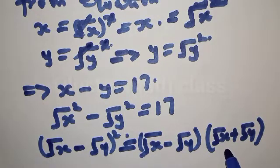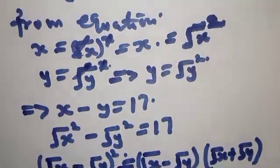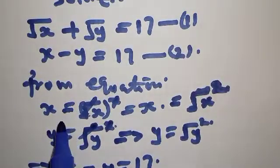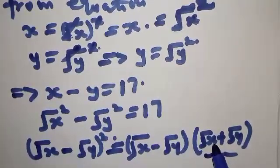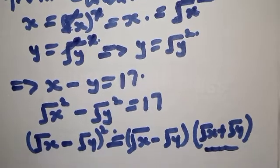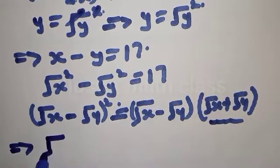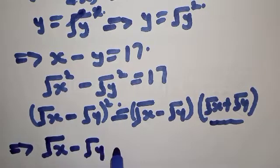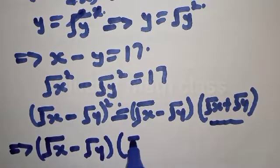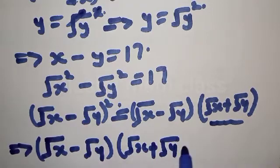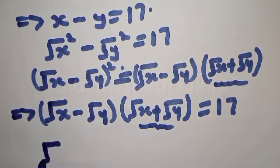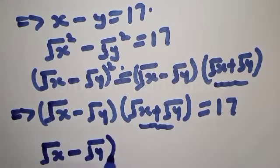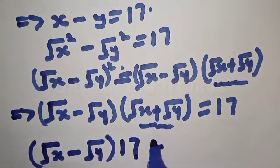We already know from equation 1 that square root of X plus square root of Y equals 17. So substituting, equation 2 becomes: square root of X minus square root of Y, multiplied by 17, equals 17. Dividing both sides by 17, we get square root of X minus square root of Y equals 1.